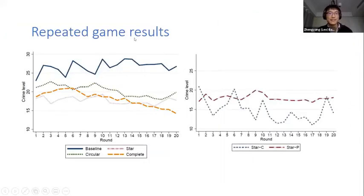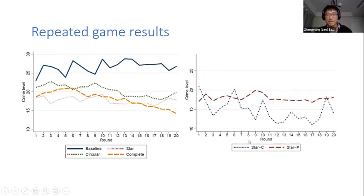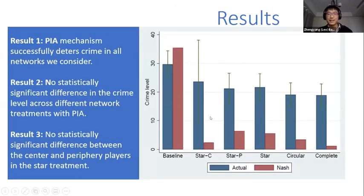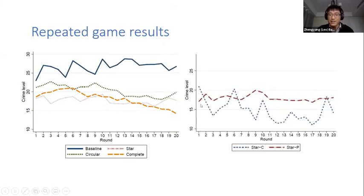We also briefly show results from the repeated game, which are very similar. The baseline has a higher crime level than all three PIA treatments. However, there is no statistically significant difference among the three PIA network treatments. Looking at star center versus fringe players: in the first round, the center player actually produces more crime than fringe players, contrary to Nash predictions, but the star center gradually learns to adjust behavior while fringe player behavior does not change much.